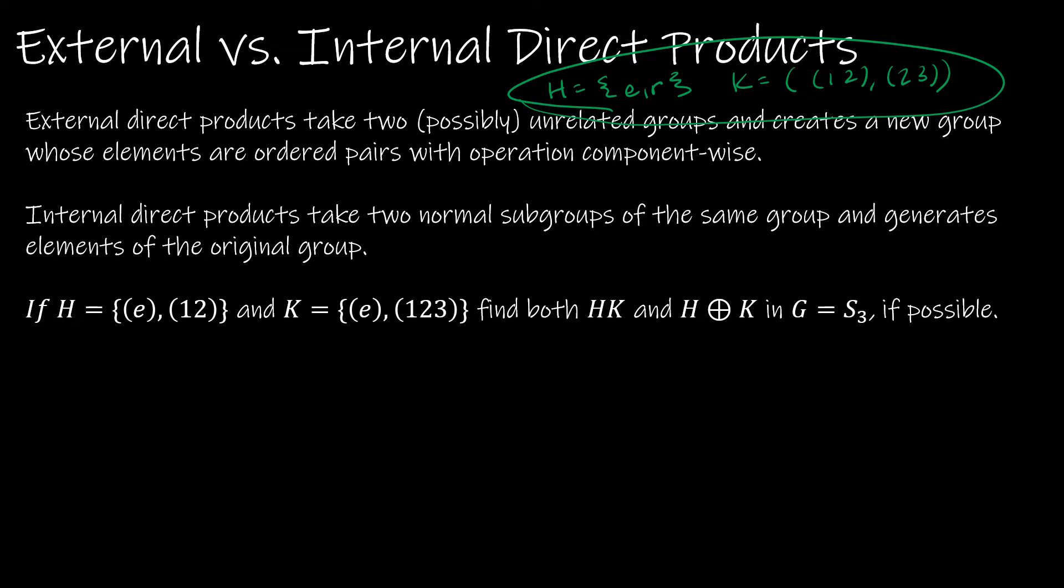So I have an example here of H equals {e, (1,2)}, and K equals {e, (1,2,3)}, which are both in S₃. Then I want you to find both the internal and external direct product if possible. We know that the external direct product is possible. We just have (e,e), (e,(1,2,3)), ((1,2),e), ((1,2),(1,2,3)).